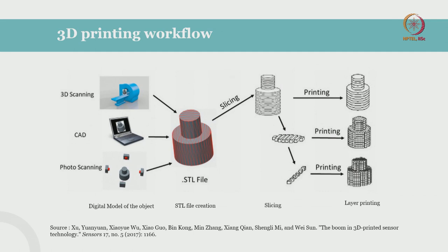Then comes photo scanning. Nowadays you can see miniature models of yourself — you can have a printed model of yourself. You will be in a photo booth covered by hundreds of cameras all around you. Those cameras click your picture at the same time, transfer your image to a computer, and the computer does the post-processing to make a 3D file from those hundreds of images. Those images are then converted into a 3D file, which we convert into formats known as STL or OBJ. The STL is the file format used for decades and is the most widely accepted 3D printing file format — it is actually a mesh file.